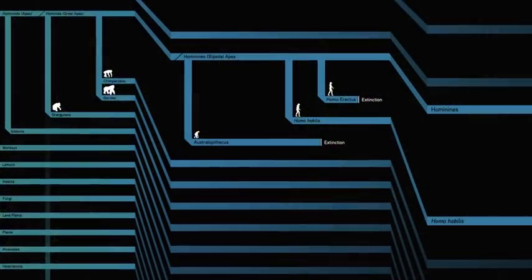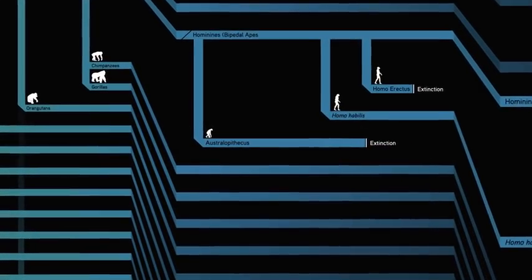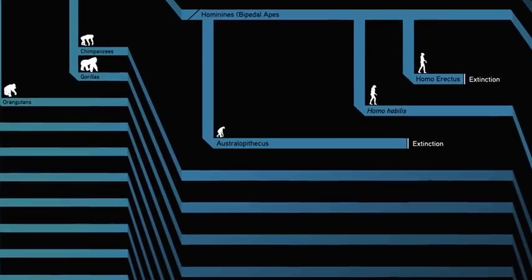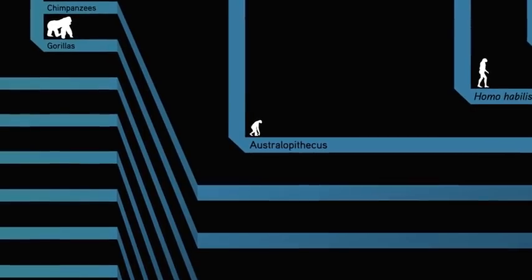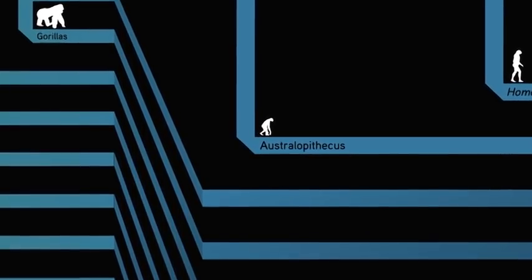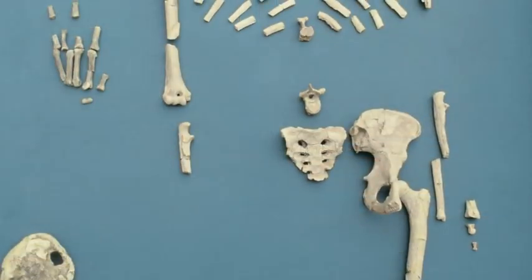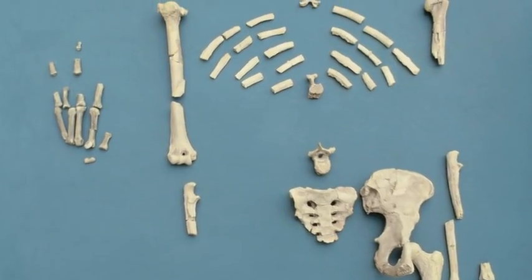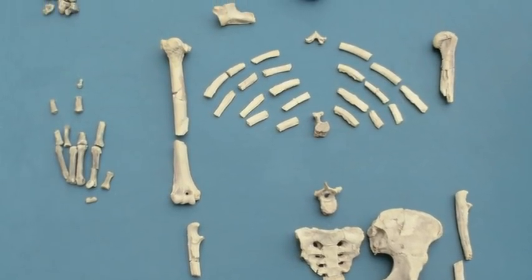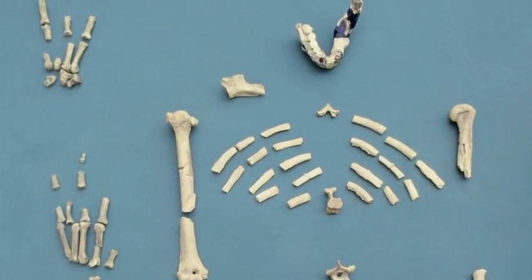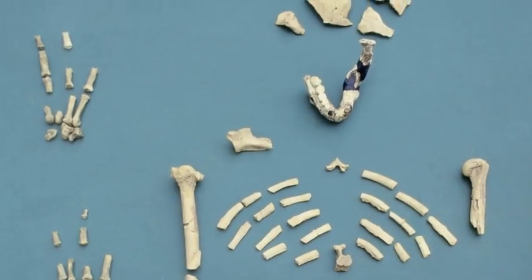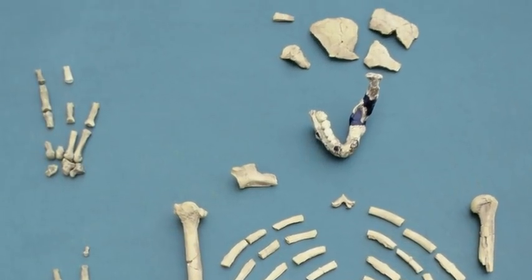One group of species, or genus as biologists call it, was the Australopithecines, or Southern Apes. The Australopithecines flourished in Africa between about 4 million and 1 million years ago. Best known of all the Australopithecines is Lucy, an individual whose remains were found in 1974 in the Hadar Valley in Ethiopia by American paleontologist Dan Johanson. Lucy had a brain about the size of a chimp's brain and stood about three and a half feet tall.